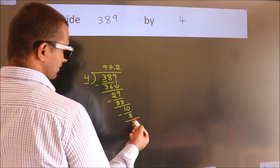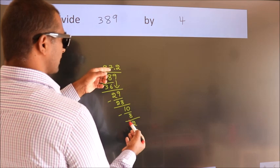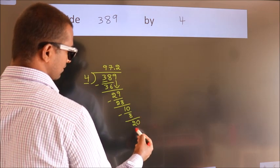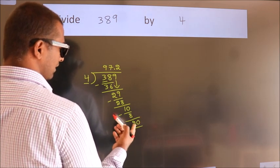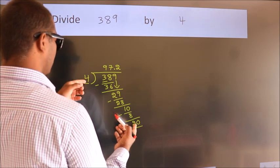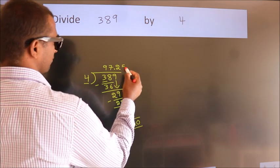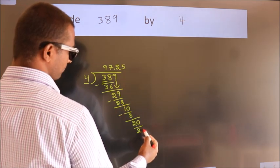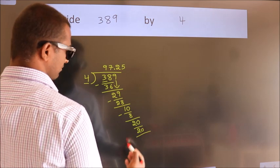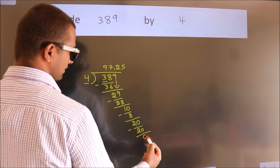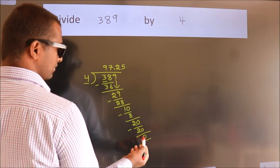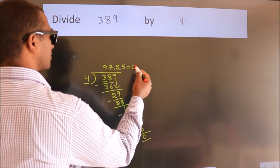After this, we already have the decimal. So directly take 0. So 20. When do we get 20 in 4 table? 4 fives, 20. Now we subtract. We get 0. We got remainder 0. So this is our quotient.